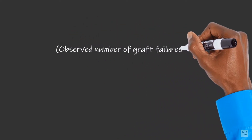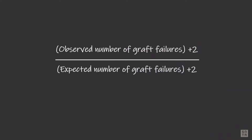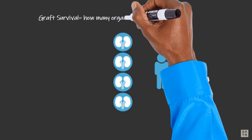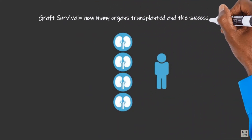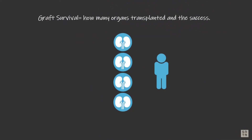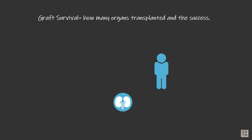We first estimate the program's hazard ratio for first-year graft failure. The hazard ratio is the number of observed graft failures plus two, divided by the number of expected failures plus two. Graft survival shows how many transplants were done at a program and indicates how well they were done. In some cases, one recipient may have had more than one transplant over time, and the data reflects this, because it shows all events that affect a patient's outcome.